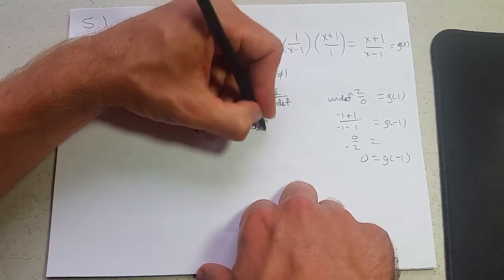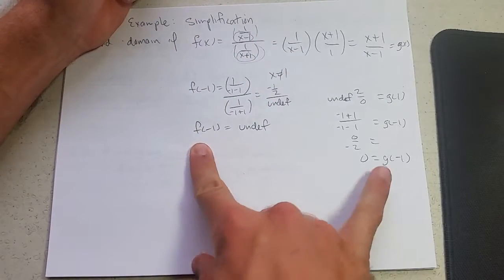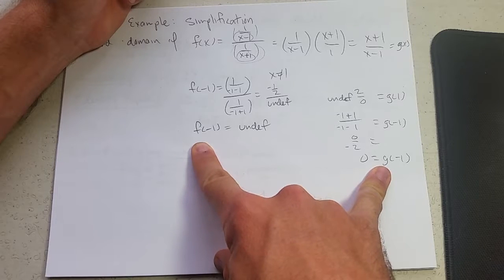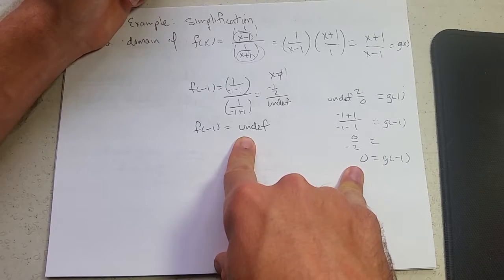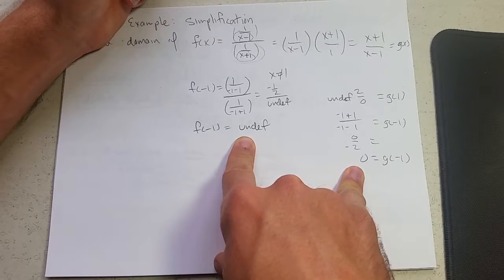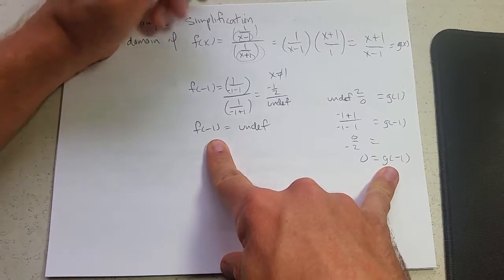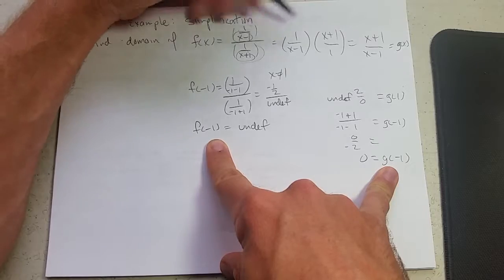So f(-1) is undefined. F is not the same as g. It's almost the same except when you feed them negative one, you get two very different outputs. So these are not actually the same function.